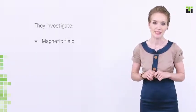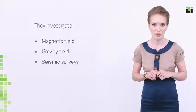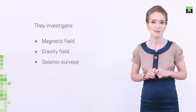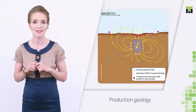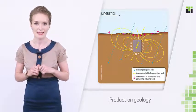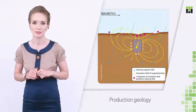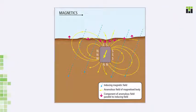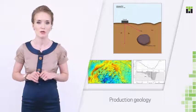They investigate magnetic fields, gravity field, and characteristics of elastic waves passing through rock formations — in other words, seismic surveys. Magnetic meters measure the smallest changes in induction of the magnetic field. Sedimentary rocks are pretty much non-magnetic, while volcanic rocks are very strong magnetic materials. These differences influence magnetic field induction in such a way that thicknesses of sedimentary formations can be calculated, and sedimentary formations might contain oil.